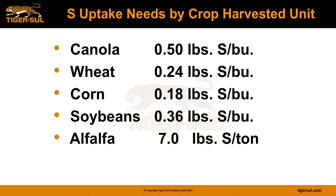To simplify making a sulfur recommendation — for example, in wheat — look at the rate of 0.24 pounds of sulfur per expected harvested bushel. For example, if you're anticipating 75 bushels of wheat, you take 75 bushels times 0.24, which gives you 18 pounds of actual sulfur per acre, as listed in the previous slide.